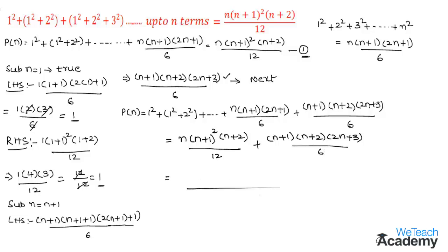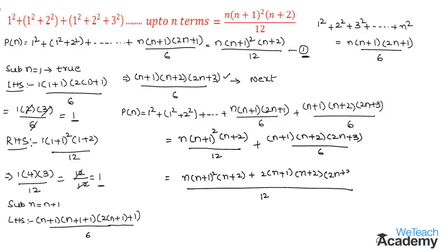Taking LCM as 12, the numerator on the RHS becomes n(n+1)²(n+2) plus, for the second term, we multiply numerator and denominator by 2 to get 2(n+1)(n+2)(2n+3). Taking (n+1)(n+2) as a common factor gives (n+1)(n+2)/12 × [n(n+1) + 2(2n+3)].